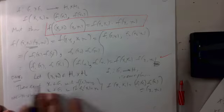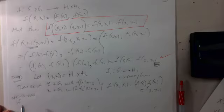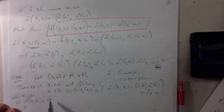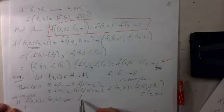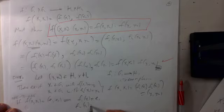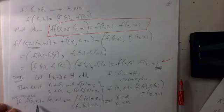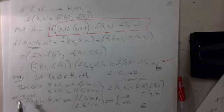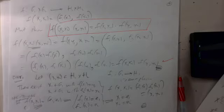To show f is one-to-one, it suffices to show the kernel is trivial. If f(x₁, x₂) is the identity, then f₁(x₁) is the identity and f₂(x₂) is the identity. Since f₁ and f₂ are isomorphisms, this means x₁ = e₁ and x₂ = e₂ — the identity element of the direct product.